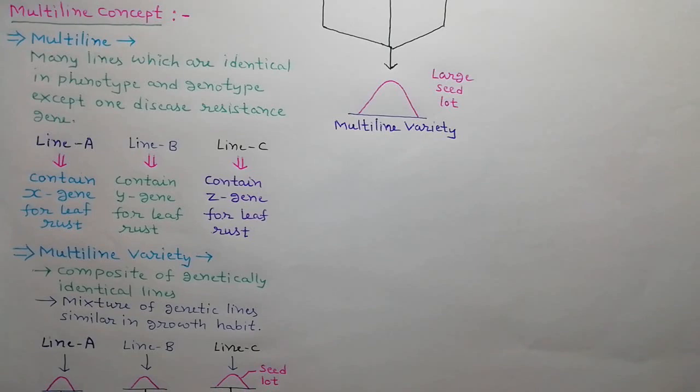As shown in the diagram, there are three lines: line A, line B, and line C. We collect the seeds from these three lines separately and mix them as a bulk. This bulk shows a multiline variety.